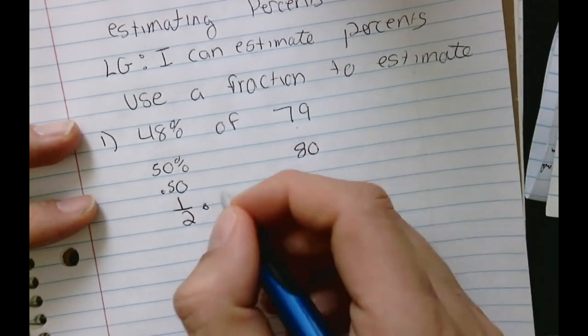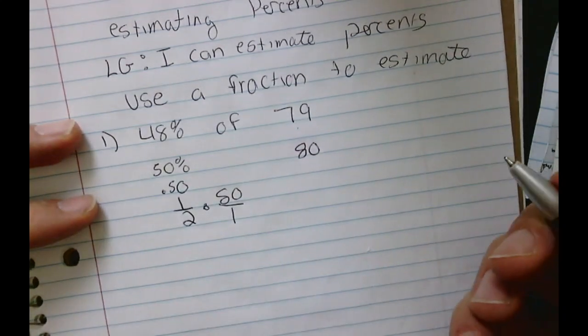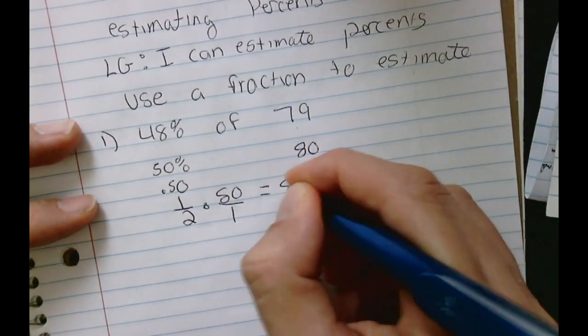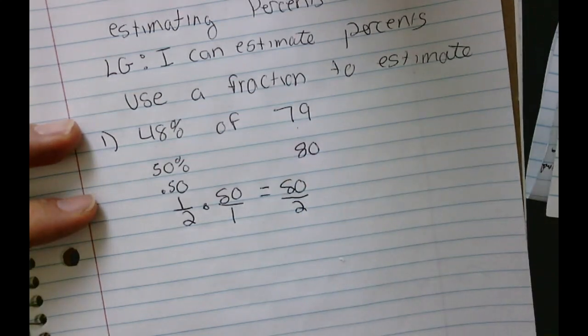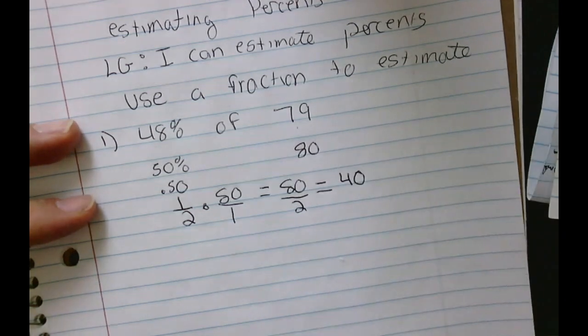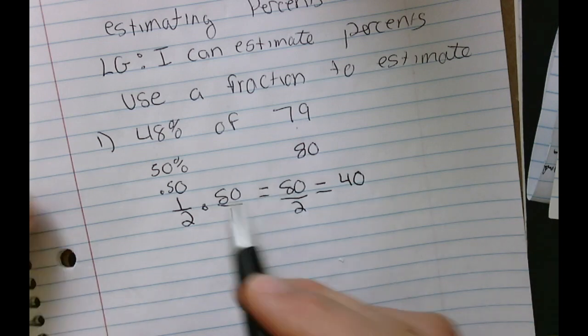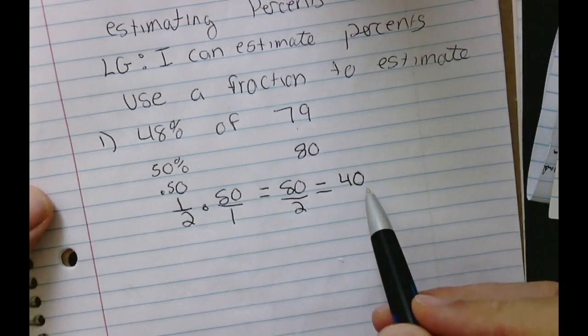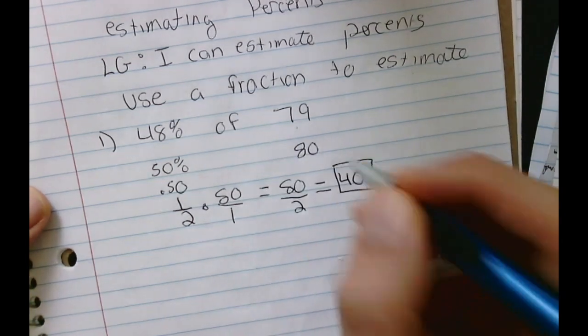So now I'm going to multiply 1 half times 80. I could write it over 1 if I'd like. So 1 times 80 is 80, and 2 times 1 is 2. 80 divided by 2 is 40. So 48% of 79 is about 40. And that makes sense because 50% of 80 is 40, so it's going to be pretty close. So we can estimate that it's 40.